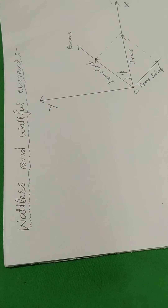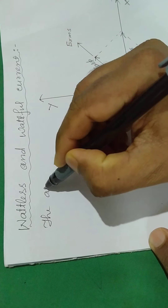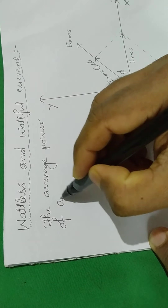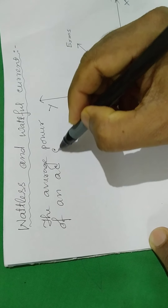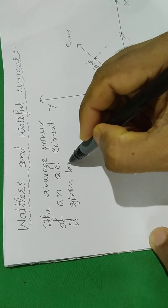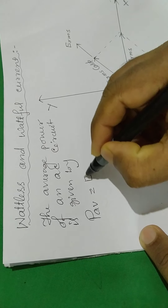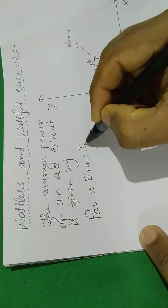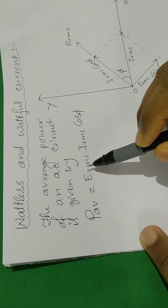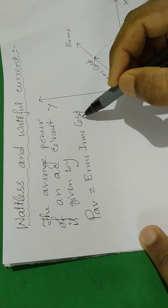As we know, the average power of an AC circuit is given by P_av = E_RMS × I_RMS × cosφ, where E_RMS is the root mean square value of the alternating EMF, I_RMS is the root mean square value of the alternating current, and cosφ is the power factor.